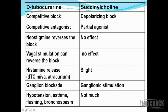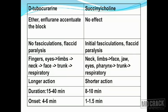Due to histamine release with D-tubocurarine, you could have hypotension, asthma, flushing, and bronchospasm. With succinylcholine, you don't get all these effects as histamine release is very slight. As far as D-tubocurarine is concerned, ether and enflurane can accentuate the block because they have similar actions, whereas with succinylcholine there will be no accentuation of this block.